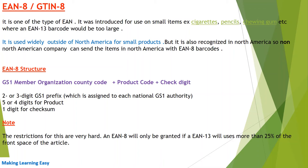EAN-8 is used widely outside of America for small products, but it is also recognized in North America, so non-North American companies can sell items in North America with EAN-8 barcodes. The structure of EAN-8 consists of three parts: country code, product code, and check digit. The country code is two to three digits, and the product code is four to five digits.